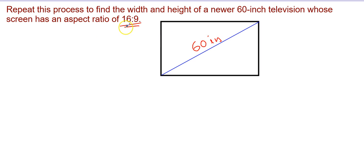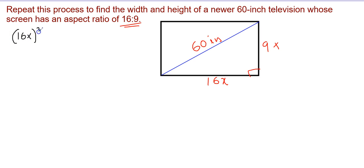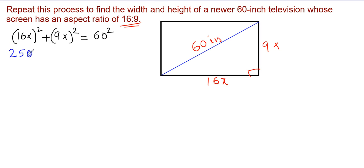The given aspect ratio is 16 to 9, so we write the width as 16x and the height as 9x for some unknown x. This again forms a right triangle, so by the Pythagorean theorem: (16x)² plus (9x)² equals c², where c is 60. Expanding: (16x)² is 16 times 16 times x², which gives 256x².